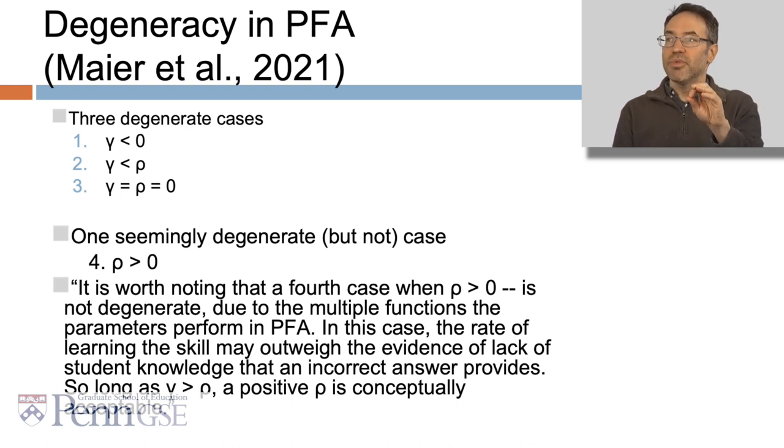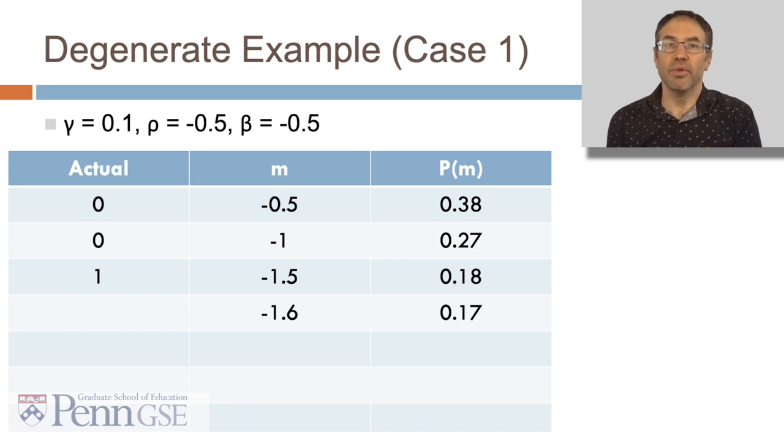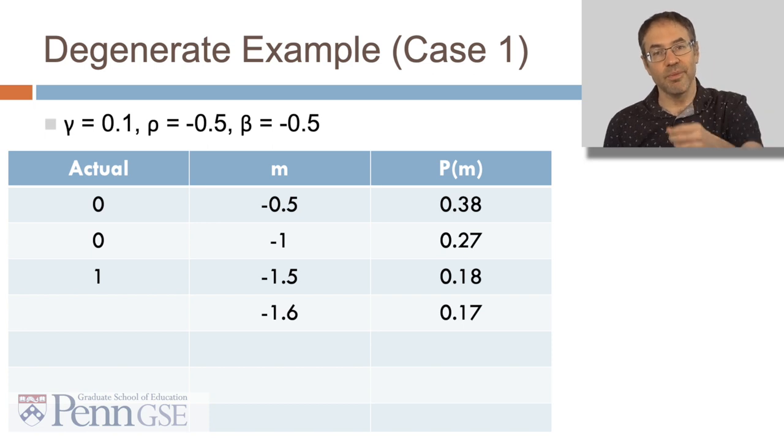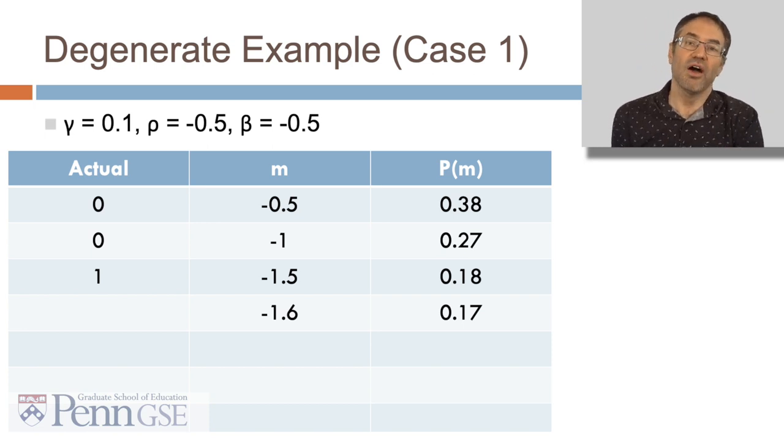So let's take an example of that first degenerate case where gamma is less than zero, which means that if you get it right, your predicted future performance is worse. This student here got it wrong the first two times, and their predicted performance drops. But then they get it right the third time, and their predicted performance still drops, from a predicted performance of 18% correct to 17% correct. They get it right and the system thinks they're doing worse, and this is degenerate within the PFA framework.